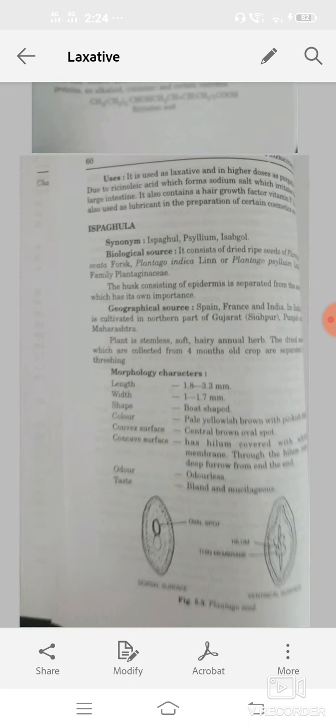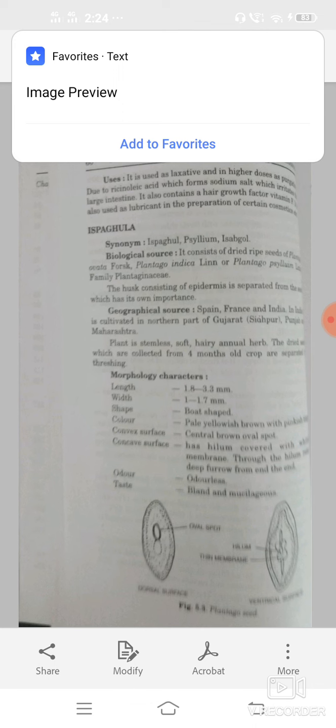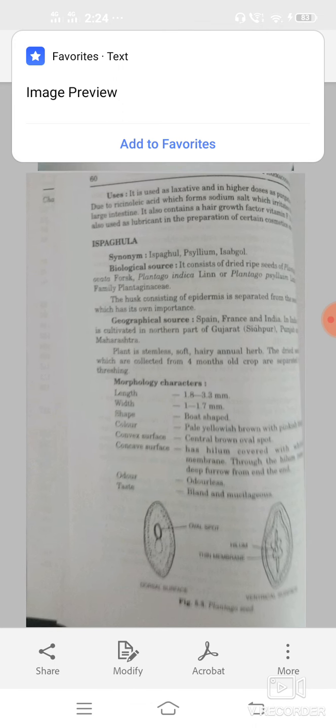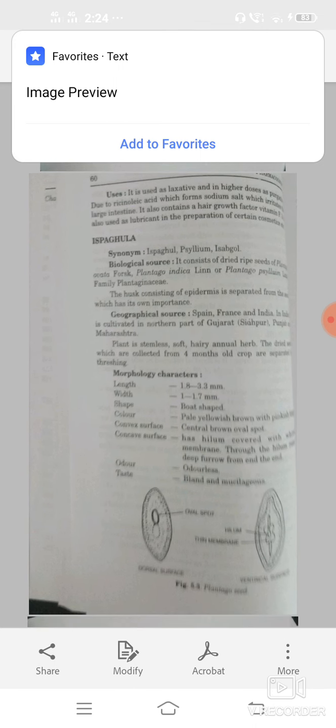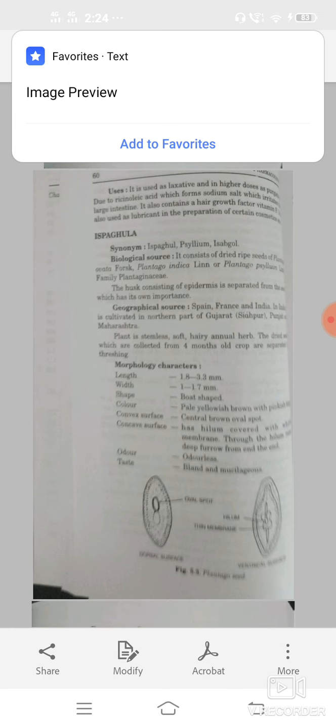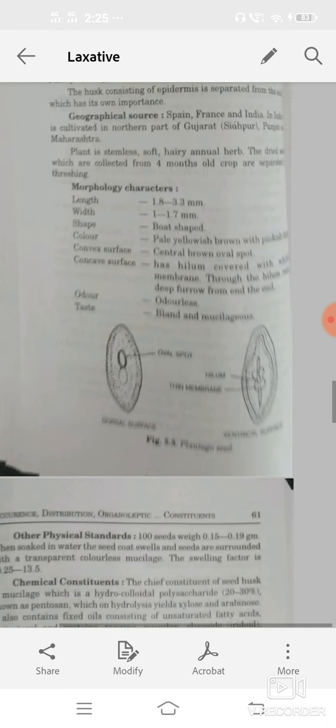Morphological characters: length 1.8 to 3.3 mm, width 1 to 1.7 mm, shape boat-shaped, color pale yellowish brown with pinkish tinge, convex surface central brown oval spots, concave surface has helium covered with whitish membrane. Through the helium runs a deep furrow from the end. In dorsal surface oval spot or in ventral surface helium or thin membrane. Odor odorless, taste mucilaginous or bland.